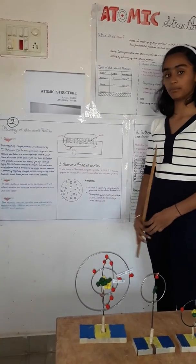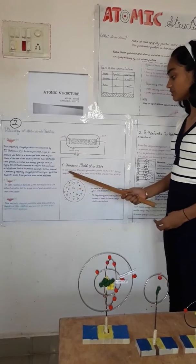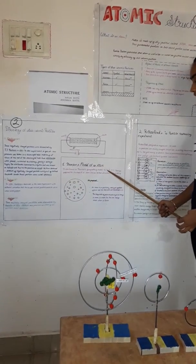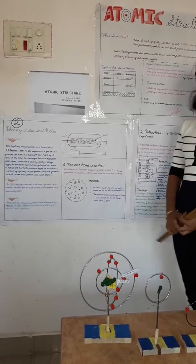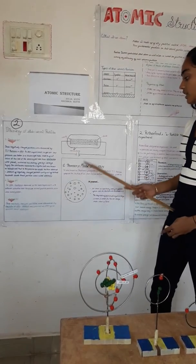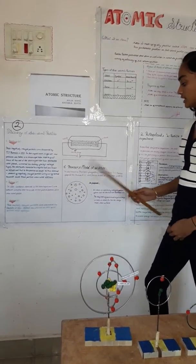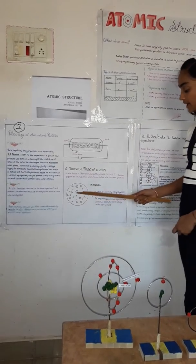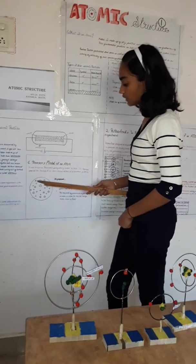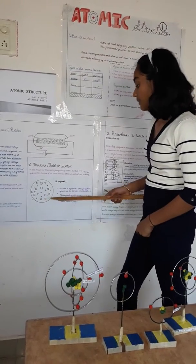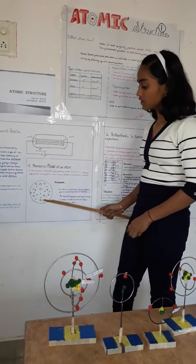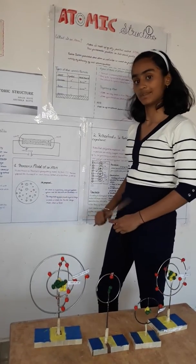Now Thomson's Plum Pudding Model. In 1903, J.J. Thomson proposed that the atomic structure is like Christmas pudding. He said that atom is a positively charged sphere and electrons are embedded in it. The magnitude of negative charge and positive charge are same, so the net charge in the atom is zero.